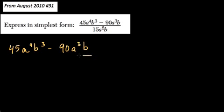Okay, so here we are simplifying this expression. It says express it in simplest form. And all this means is that we have 45a to the 4th b to the 3rd minus 90a squared b over 15a squared b.